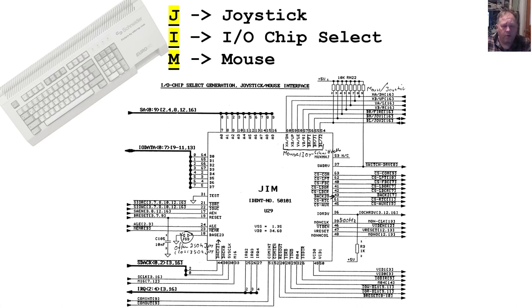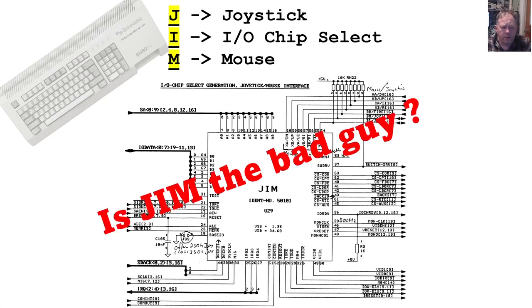Hi, this is Koiro and this time we are going to go a bit more in depth on the GYM chip of the Euro PC. As I said last time, I had not looked into all the connections on the GYM chip when we filmed the last video, but now I have. The fancy name GYM is just an acronym for Joystick, EO, select, and Mouse. The question we are going to try to answer this time is: is GYM the bad guy?